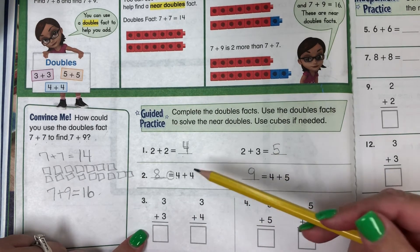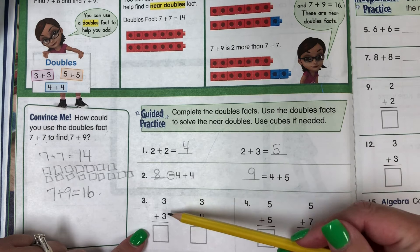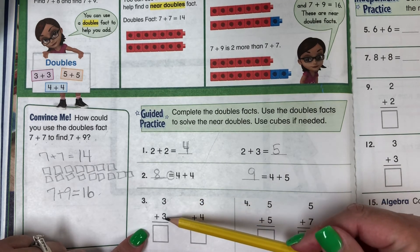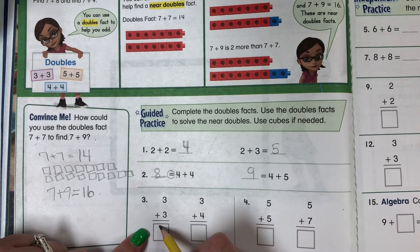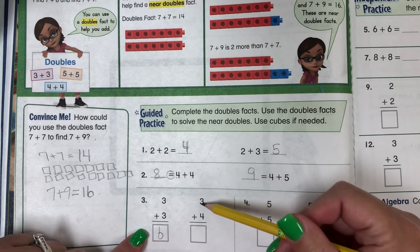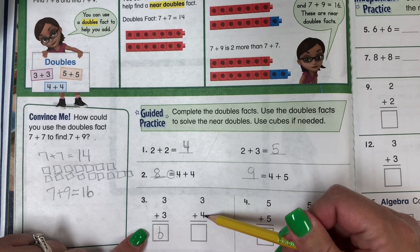Remember, addends can also go up and down. So 3 plus 3 is 6.